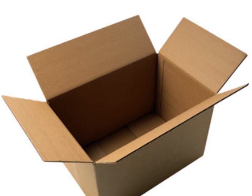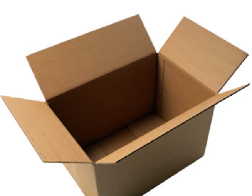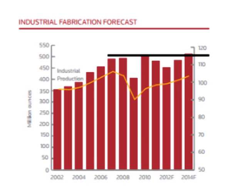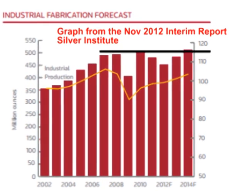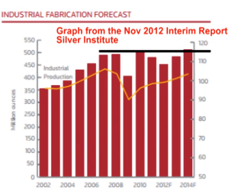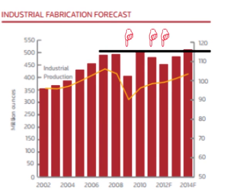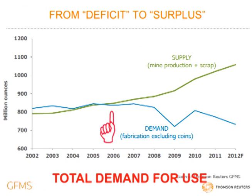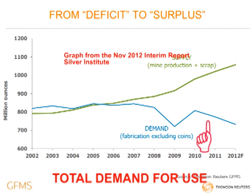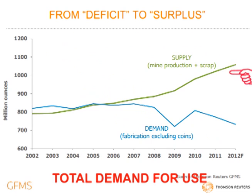Often people react to this information by stating that industrial demand, solar, or some other use for silver is going to use up all the available supply. However, the silver industry's own reports show that industrial use is flat and declined three out of the last four years. Total use for silver is declining, and total use as a percent of supply is dropping fast.